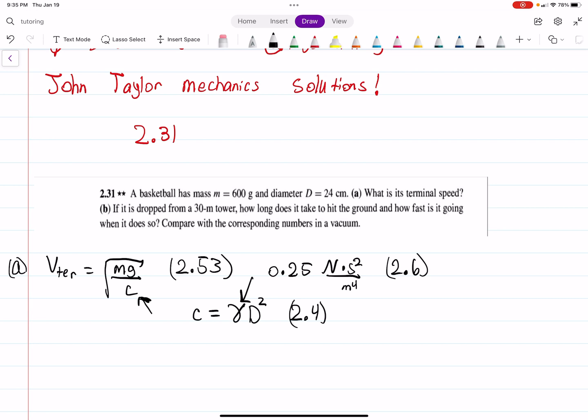This is actually just kind of plugging in at this point. This is equal to the square root of mg over gamma d squared. Everything is given. And when I plug that in, I get about 20.2 meters per second.